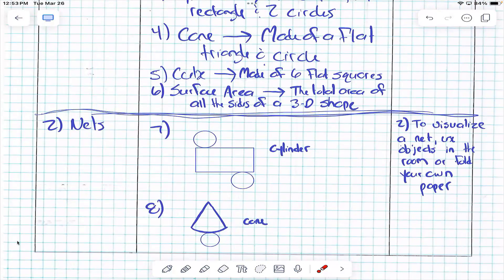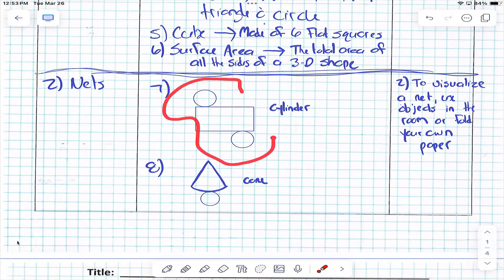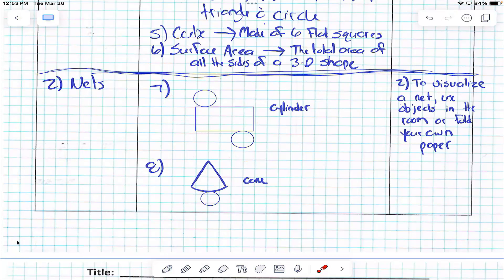All right, let's talk about nets. So nets are flat. This is a flat, broken down shape.